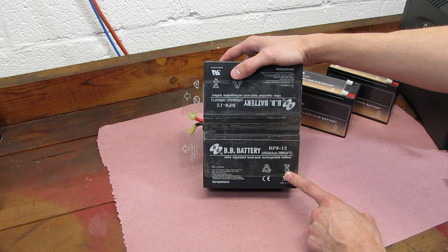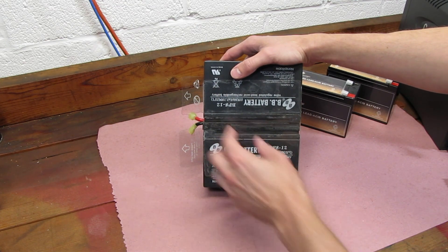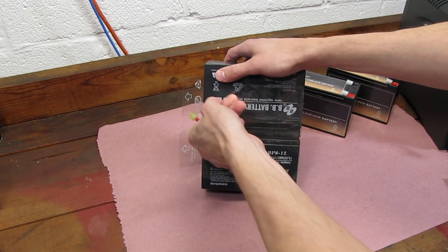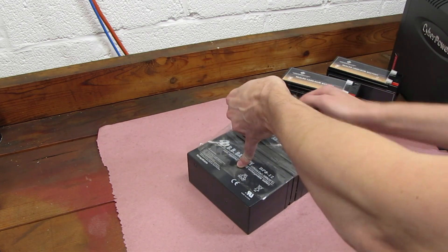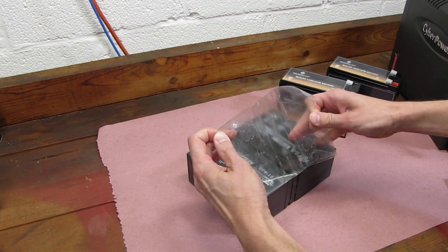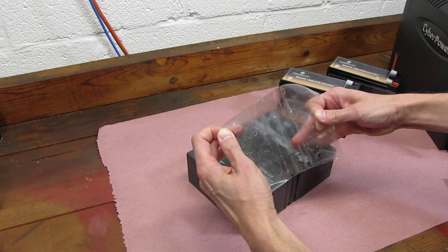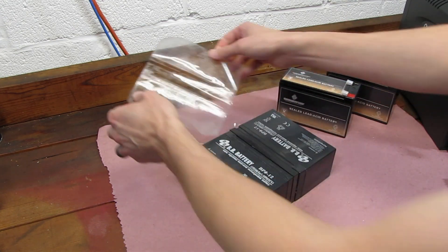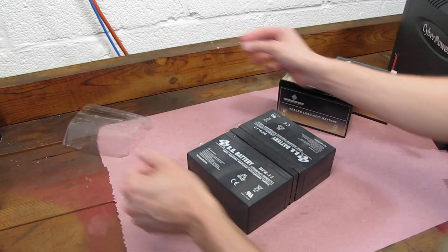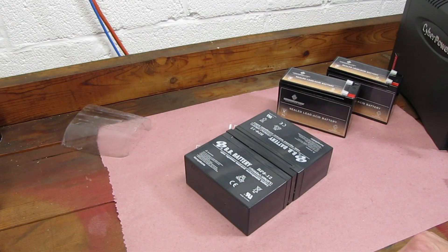First thing we have to do is remove the plastic sheet which is adhered to the front of these batteries. If you're careful, you can keep it in good condition and use it on the other ones. Then we'll do the same thing on the other side.